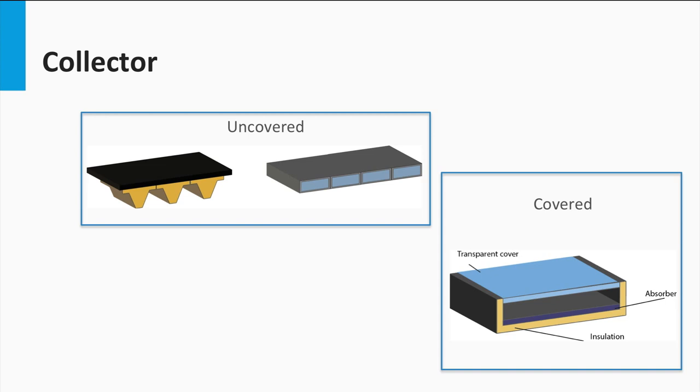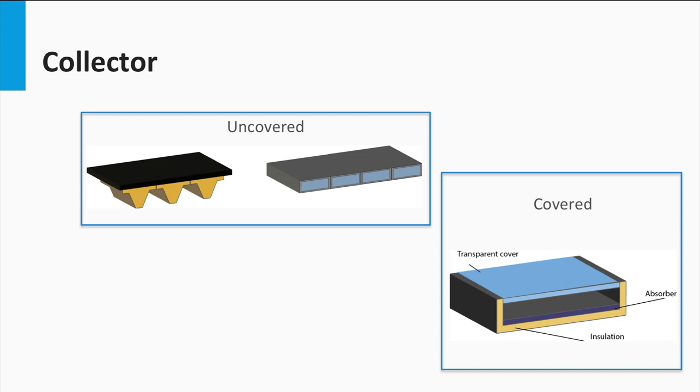Covered collectors, on the other hand, are covered by a transparent material, providing extra insulation, but also increasing reflection losses. These collectors are used for temperatures up to 100 degrees Celsius.